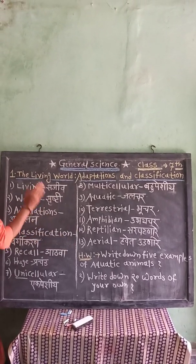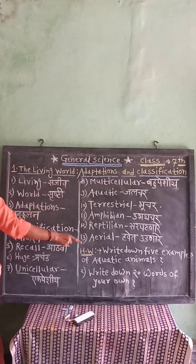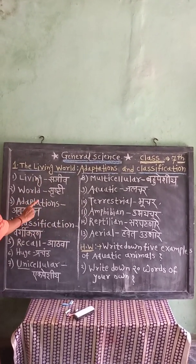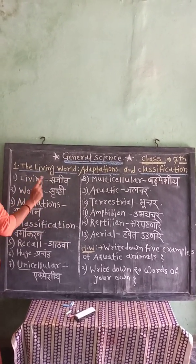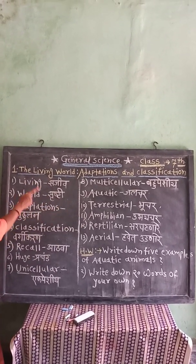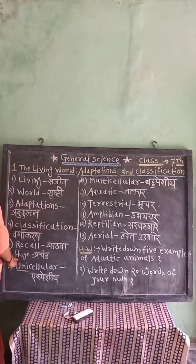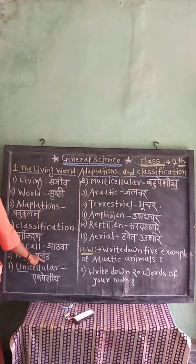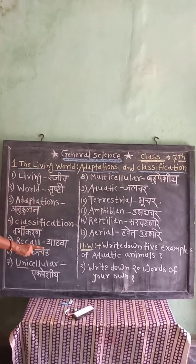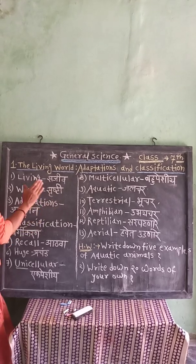Some plants grow in water, some plants are found in the desert, and some are found in snowy regions. Some plants cannot be seen without a microscope, whereas some are huge in size. Like plants, animals also show diversity.